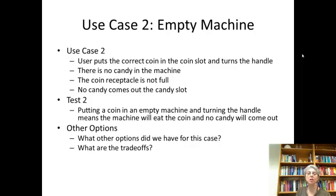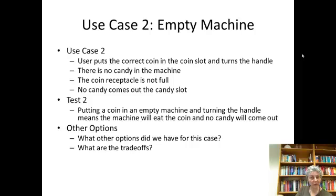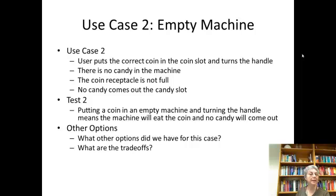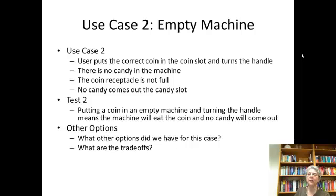Second case: what if we have an empty machine? The user puts the correct coin in, turns the handle, there's no candy in the machine and the coin receptacle is not full, so the handle will turn and no candy comes out — the machine eats the coin. Was that fair? It's a trade-off, and this is where the requirements process really comes in. We could say the handle won't turn, but that would mean the machine has to somehow know it doesn't have candy, which might be too expensive. So we make the machine clear so you can see if there's no candy, and if you still put a coin in, we feel okay about taking your money.